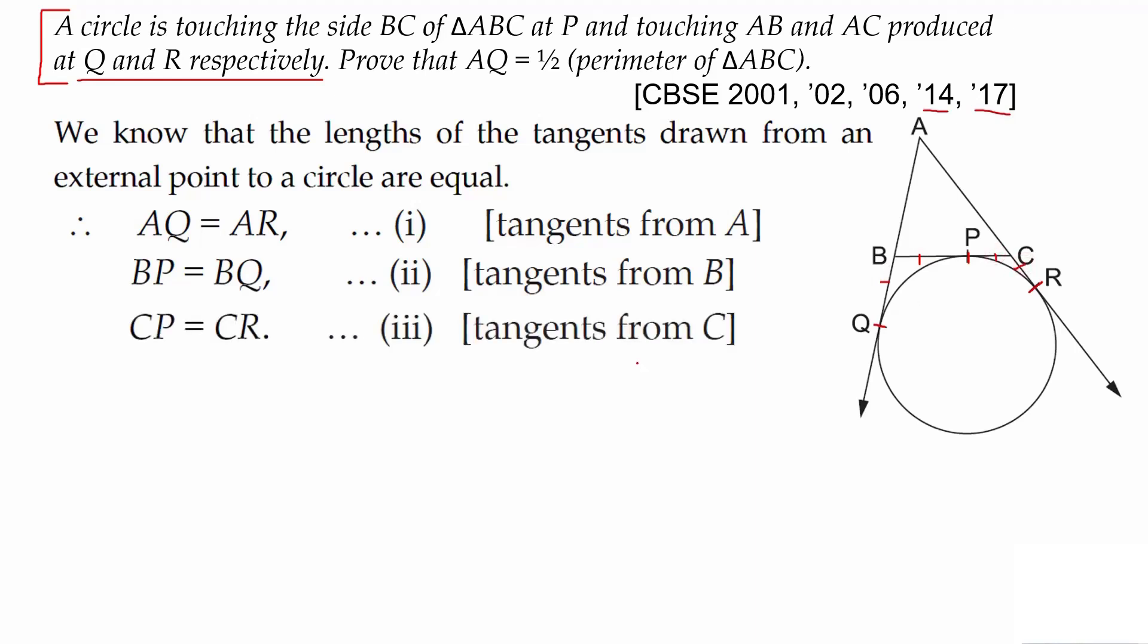What is the perimeter of triangle ABC? Perimeter equals AB plus BC plus AC, the sum of three sides. Now we split BC as BP plus CP.